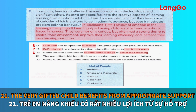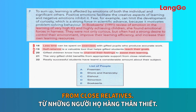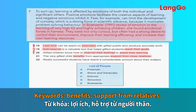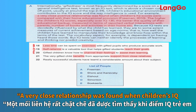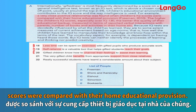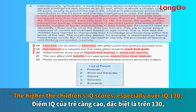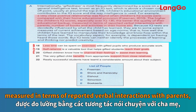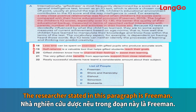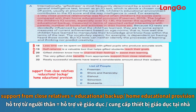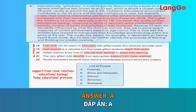Number 21: the very gifted child benefits from appropriate support from close relatives. Our keywords are benefits and support from relatives. In paragraph A, the author states that a very close relationship was found when children's IQ scores were compared with their home educational provision. The higher the children's IQ scores, especially over 130, the better the quality of their educational backup, measured in terms of reported verbal interactions with parents and number of books and activities in their home. Support from close relatives and educational backup or home educational provision mean the same thing. Our answer here is A.